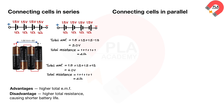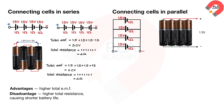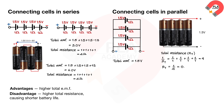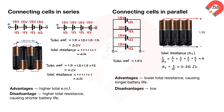Connecting cells in parallel. Each cell has an EMF of 1.5 volts and a resistance of 1 ohm. With four cells connected in parallel, the total EMF is 1.5 volts. Using the parallel resistance formula, 1 over R_T equals 1 plus 1 plus 1 plus 1 equals 4, so the total resistance equals 0.25 ohms. The advantage is lower total resistance, causing longer battery life; the disadvantage is lower total EMF.